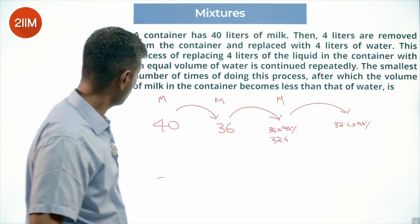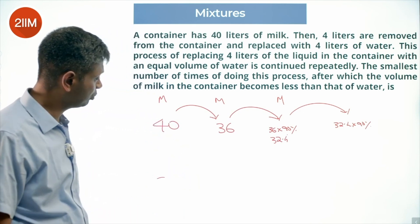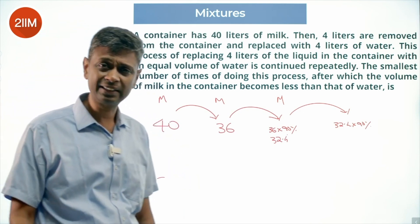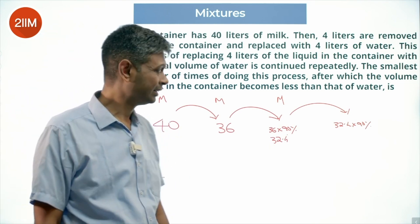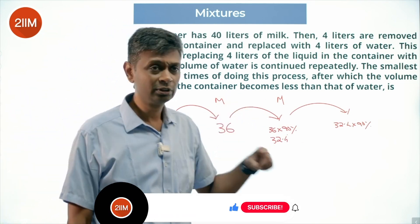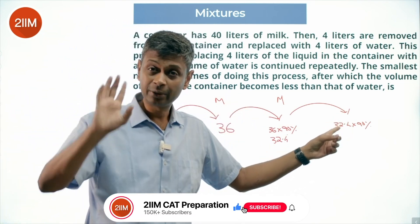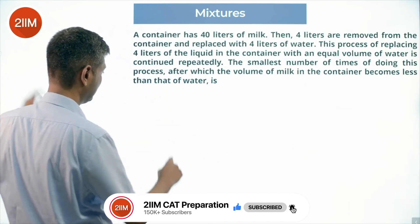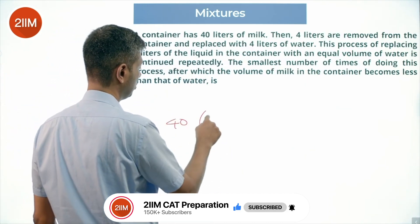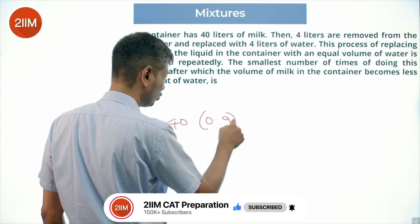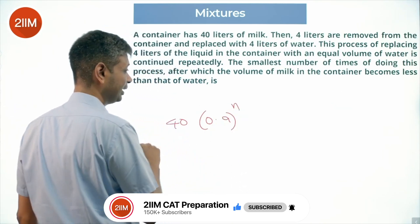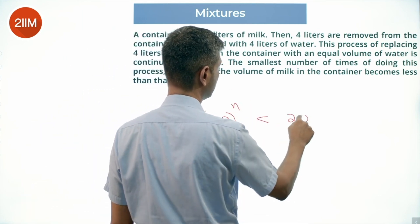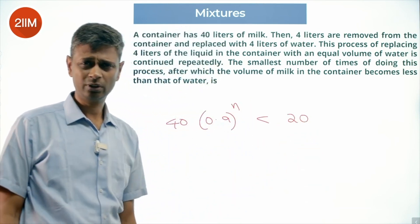Now I am done. The smallest number of times doing this process after which the volume of milk becomes less than that of water means the volume of milk should be less than 20 liters. Effectively, I take 40, multiply it by 0.9 several times to reach a point where this number becomes less than 20.